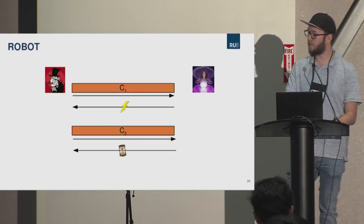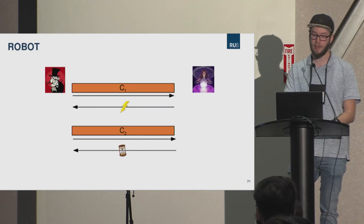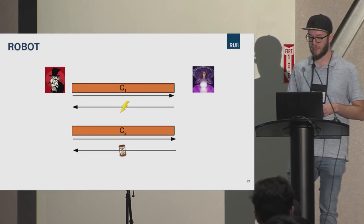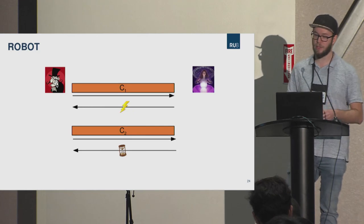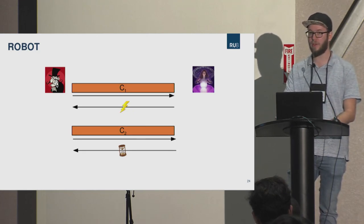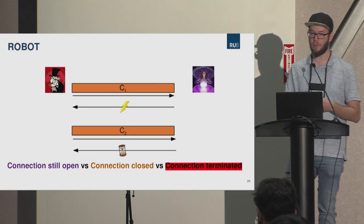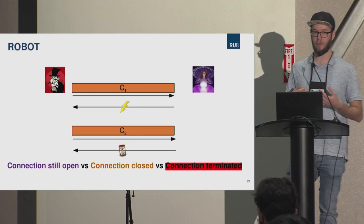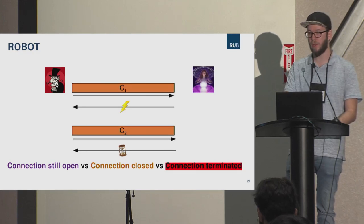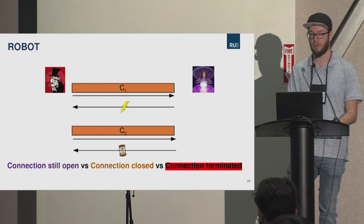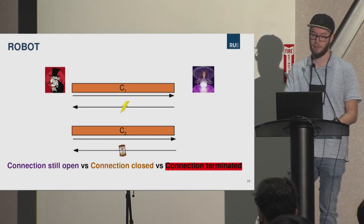The ROBOT attack is a Bleichenbacher vulnerability, not a CBC padding oracle, presented last year at USENIX. The interesting part for our research was their discovery of new side channels: some servers show different behavior at the TCP layer rather than in error messages. Specifically, sometimes a server leaves the TCP connection open, sometimes closes it with a TCP FIN, and sometimes terminates with a TCP RST. These are different interfaces at the OS level. We thought these TCP-layer side channels might also be relevant for CBC padding oracle vulnerabilities.